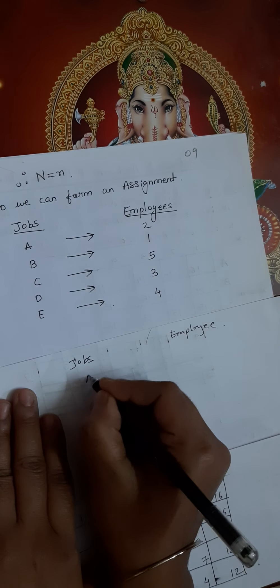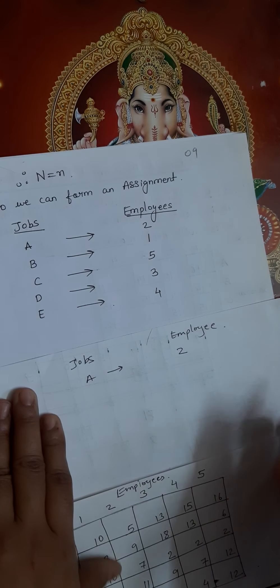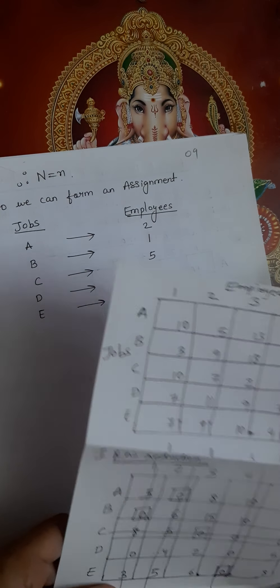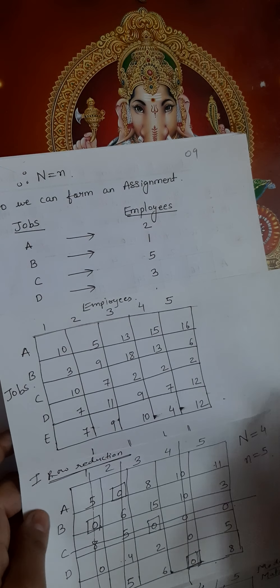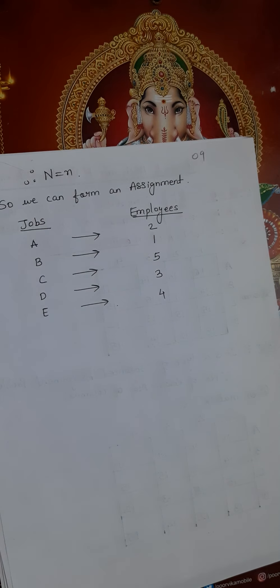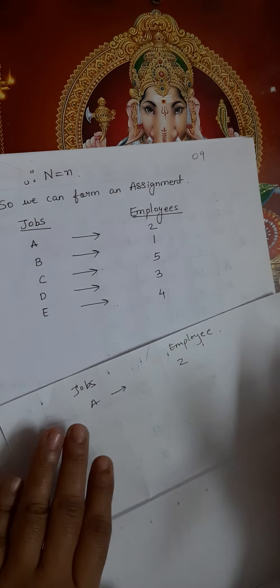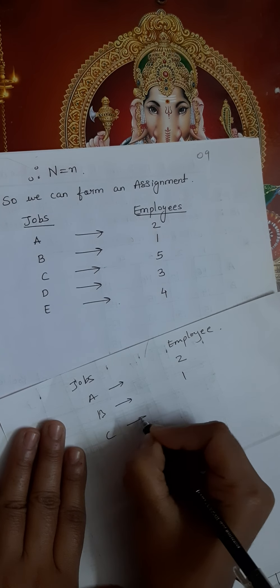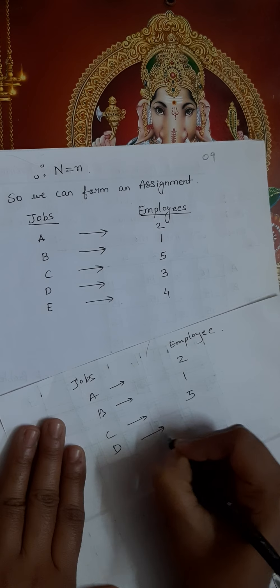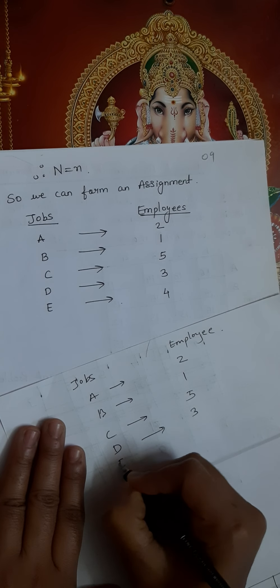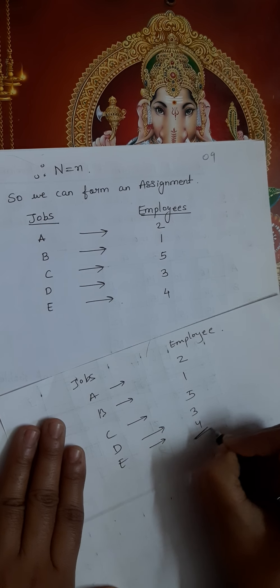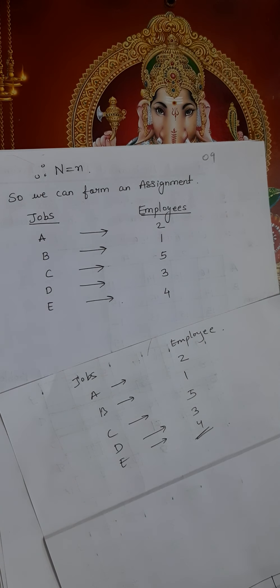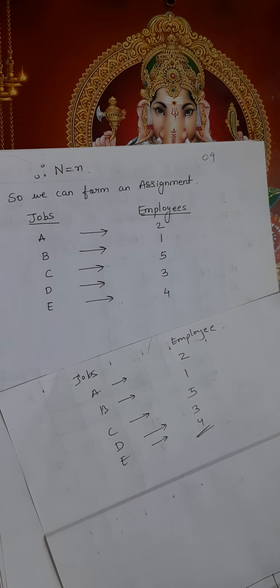The final assignment is: Employee A is assigned to Job 2, Employee B is assigned to Job 1, Employee C is assigned to Job 5, Employee D is assigned to Job 3, and Employee E is assigned to Job 4. Thanks for watching. Don't forget to like, share, and subscribe to the channel for more videos.